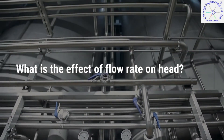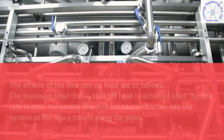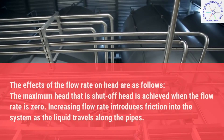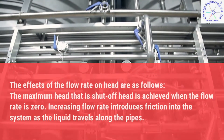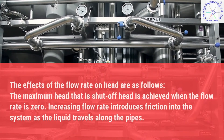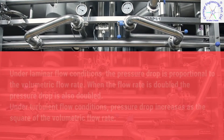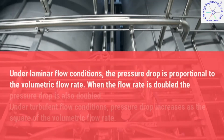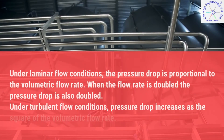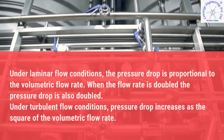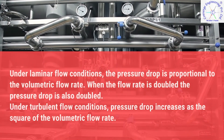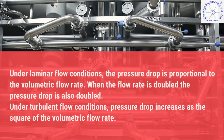What is the effect of flow rate on head? The maximum head, that is shut off head, is achieved when the flow rate is zero. Increasing flow rate introduces friction into the system as the liquid travels along the pipes. Under laminar flow conditions, the pressure drop is proportional to the volumetric flow rate; when the flow rate is doubled, the pressure drop is also doubled. Under turbulent flow conditions, pressure drop increases as the square of the volumetric flow rate.